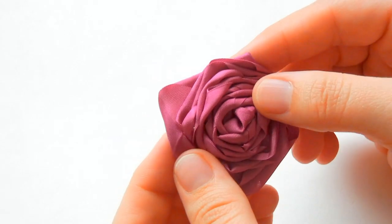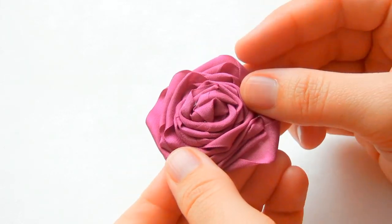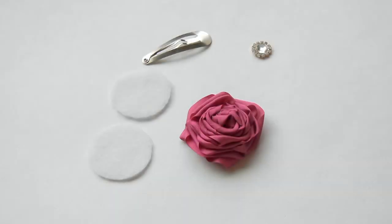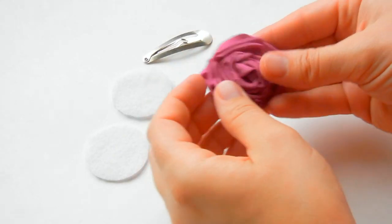Now we're just going to get out our felt circles and add our clip. Here's our finished rosette. I'm going to add a gem to the center.